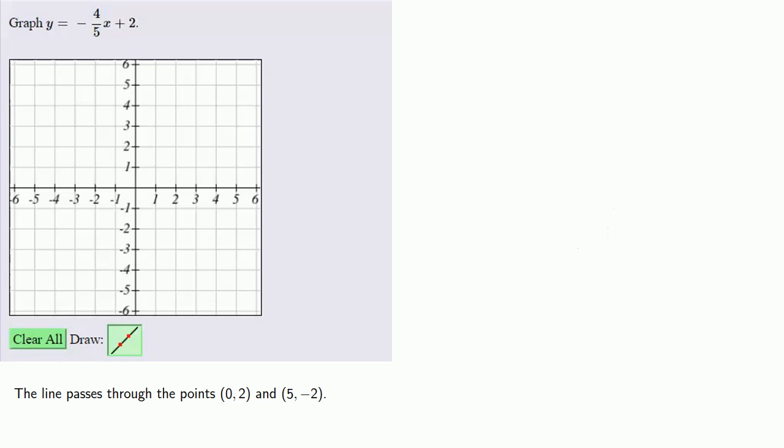And so now we can try and graph that line. So first, we'll go to our point (0, 2), and my open math wants to draw a line at this point, so we've got to be careful and go exactly to the point (5, negative 2).